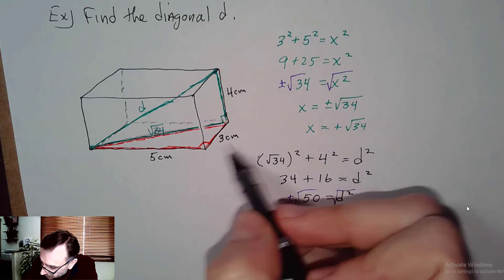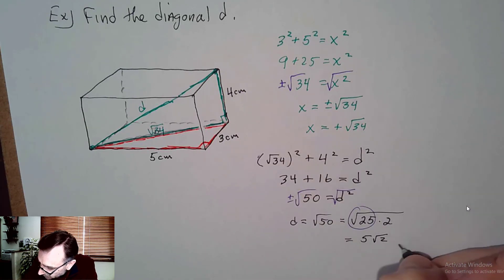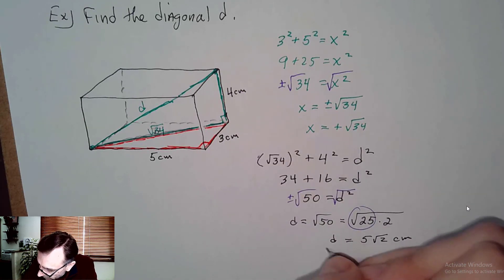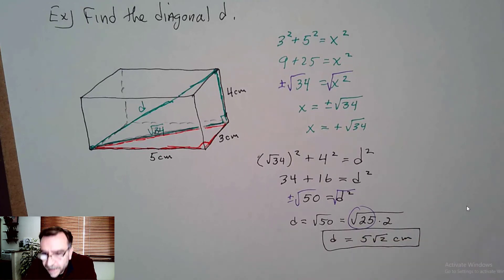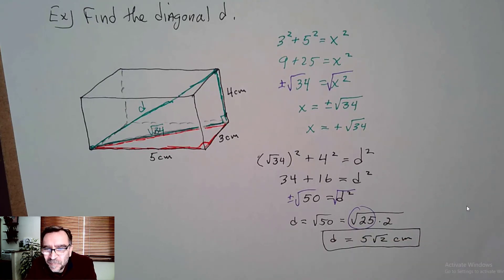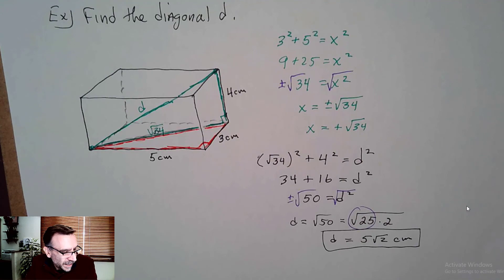The measurement is in units, so the length of that diagonal is 5 square root of 2 units. And there you have it.